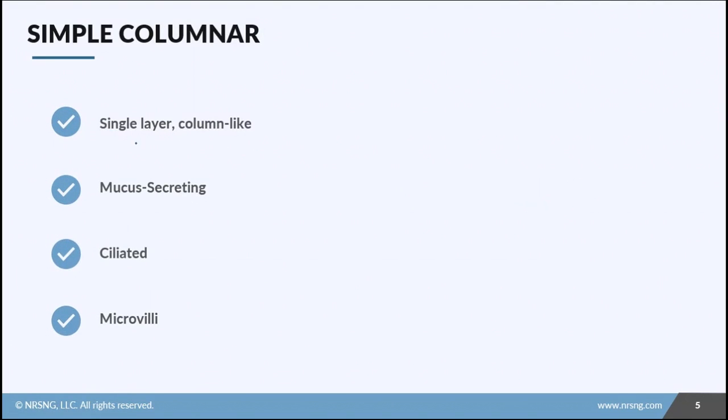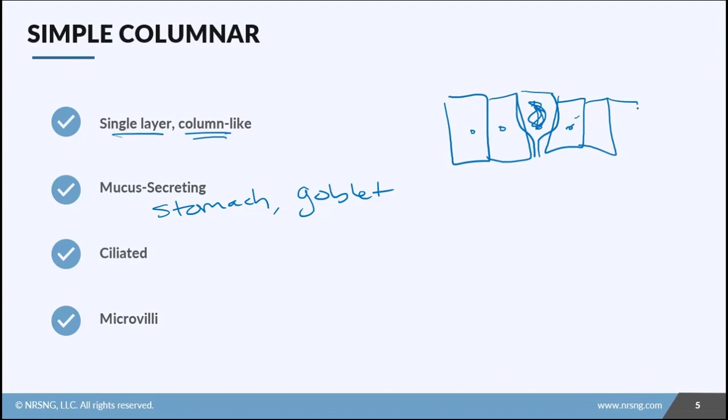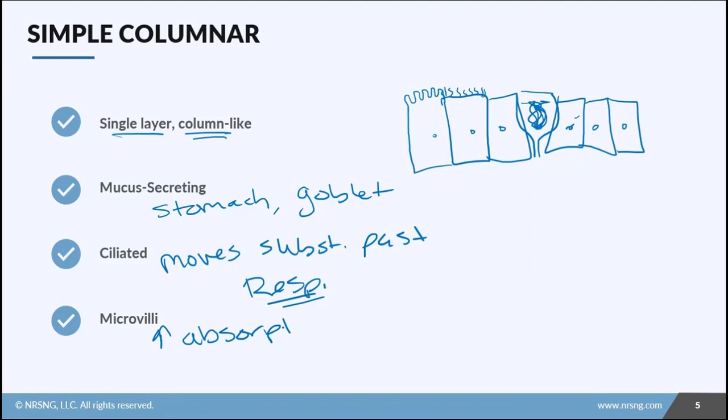Then there's simple columnar. This is a single layer of column-like cells. Some of these are mucus secreting, like in the stomach, or we could see goblet cells. The goblet cell literally looks like a goblet and has mucus in it. You could also see some of these being ciliated, which means they have little hair-like projections. The purpose of these hair-like projections is to move substances past the cell. The best example is in the respiratory tract. You could also have a columnar cell in this epithelium that has microvilli. The benefit of microvilli is it increases surface area for absorption, and the most common place we find this is in the small intestine.